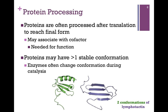Even though a protein folds into a stable conformation, there may be more than one form. Since structure always relates to function, a protein serving a dual function can fold in one of two different ways. Illustrated here are the two conformations of lymphotactin: on the left there are some beta strands and an alpha helix, while on the right there are all antiparallel beta strands. Both of these are stable conformations that simply serve alternate functions.